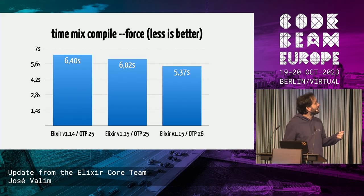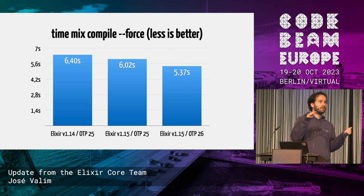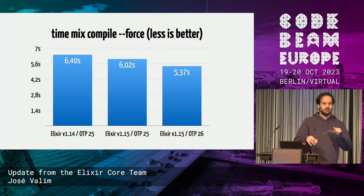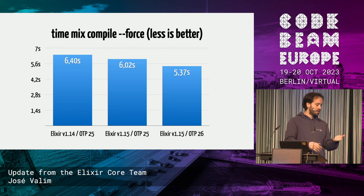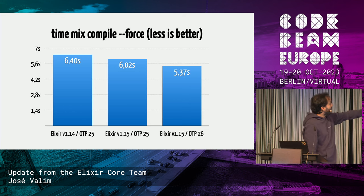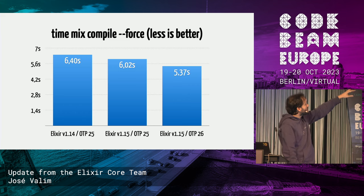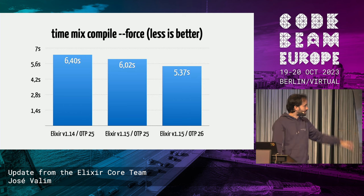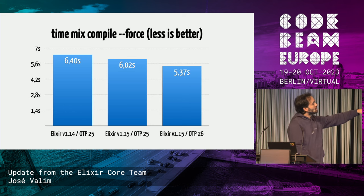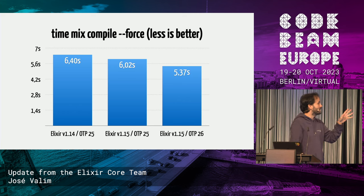Here are the numbers for compiling the Livebook application — about 200 files and 40 dependencies. With Elixir 1.15 on OTP 25, compiling all files from scratch took about 6.4 seconds. Moving to Elixir 1.15 while still on OTP 25, we got a 7% to 8% improvement.